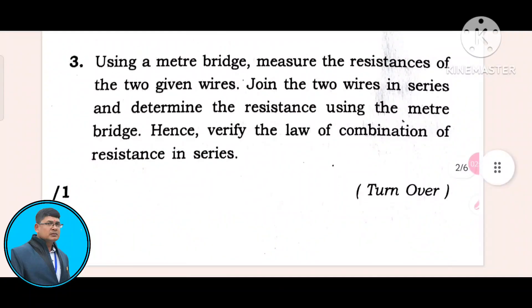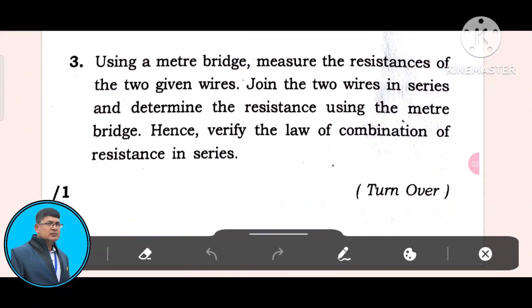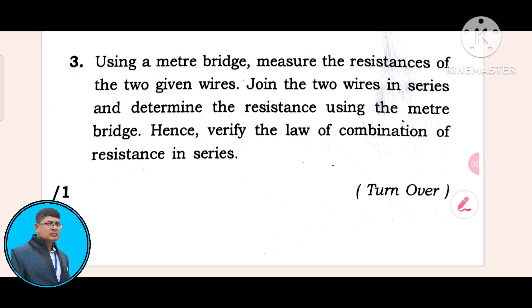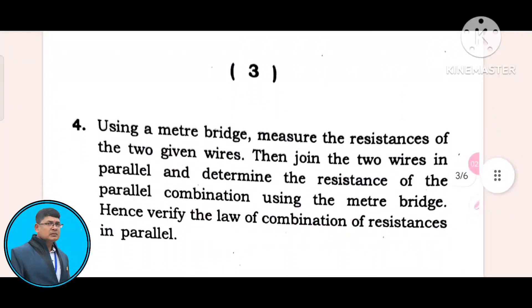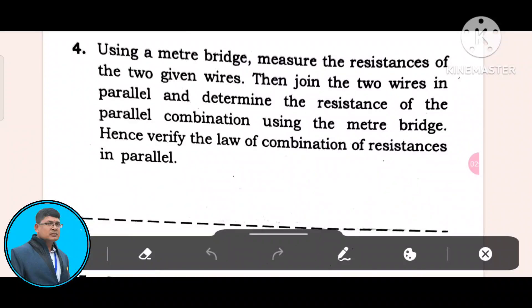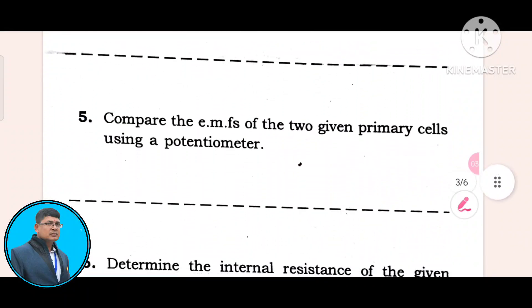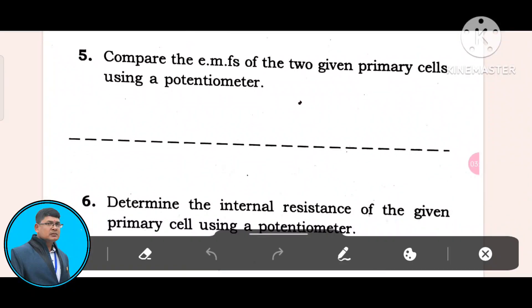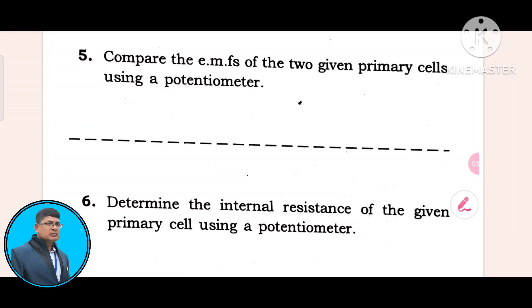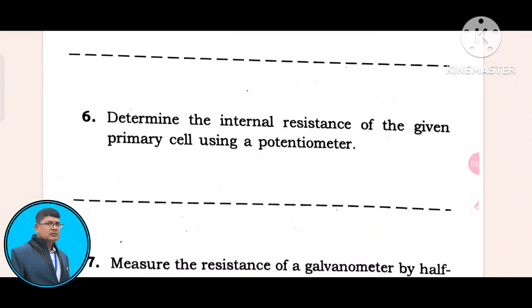Question three: Using the meter bridge, measure the resistance of two given wires. Join the two wires in series and determine the resistance using the meter bridge, hence verify the law of combination of resistance in series. Question four involves parallel combination. Question five: Compare the EMFs of two given primary cells using a potentiometer. Question six: Determine the internal resistance of the given primary cell using the potentiometer.